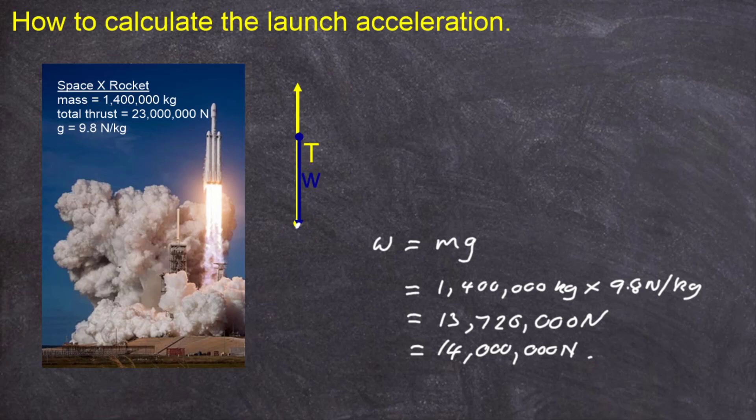So, to work out the unbalanced force, or the net force, we do the following. Unbalanced force is equal to the thrust force, which we know as 23,000,000 newtons, and we're going to be taking away the weight force, which is acting downwards, of 14,000,000 newtons. So there's our two forces. And the unbalanced force will be the difference between those ones.